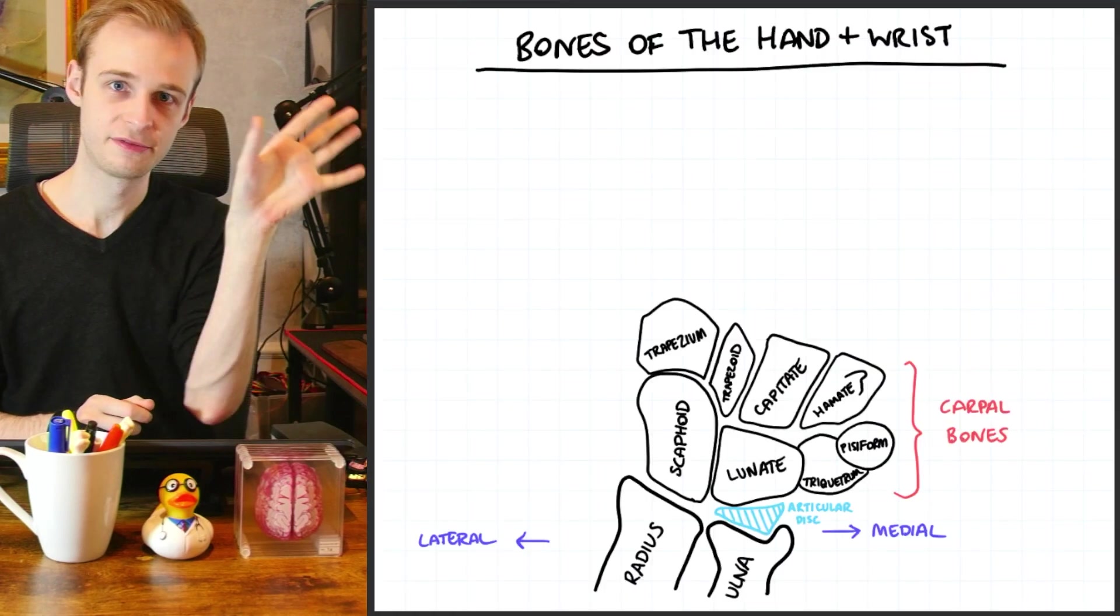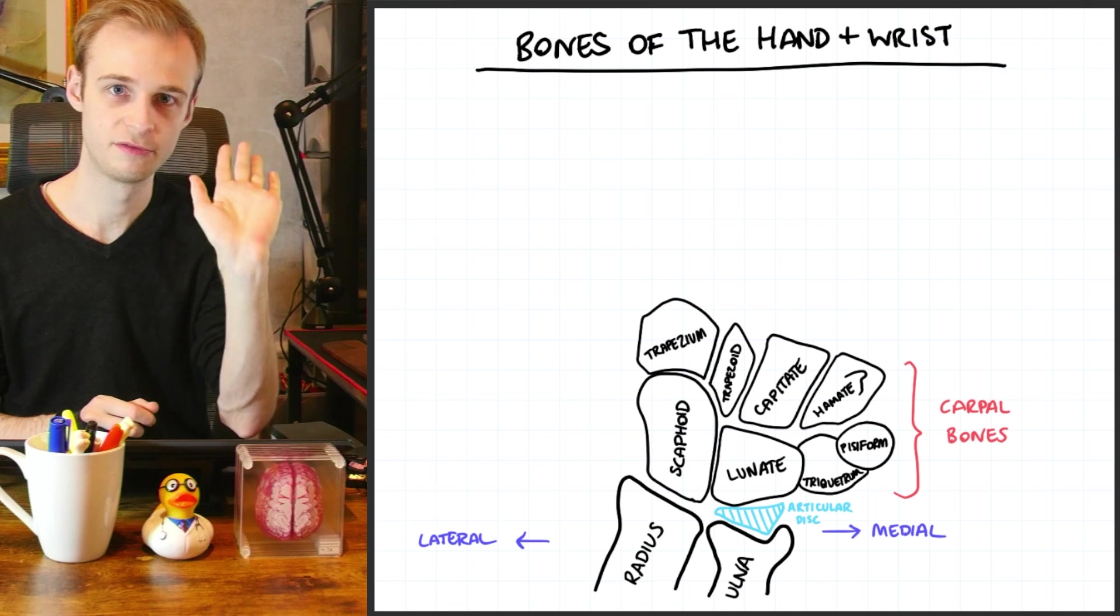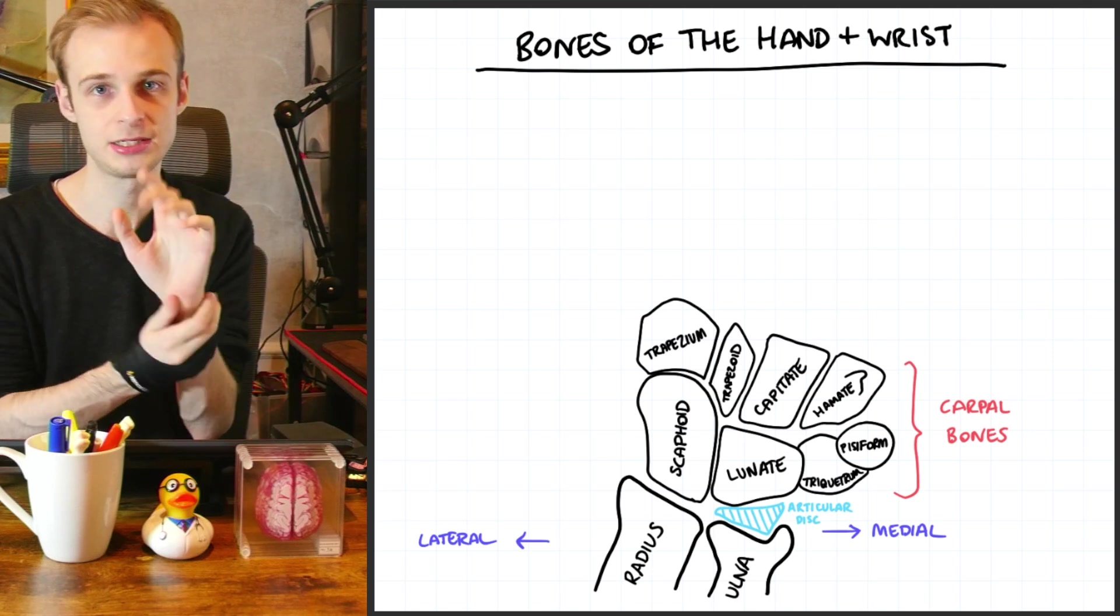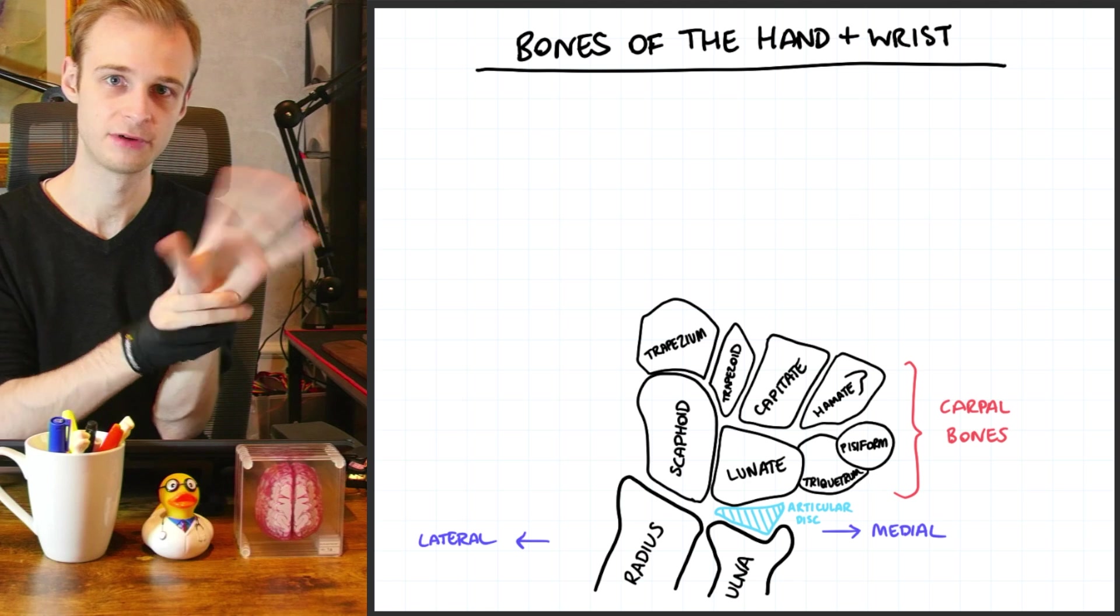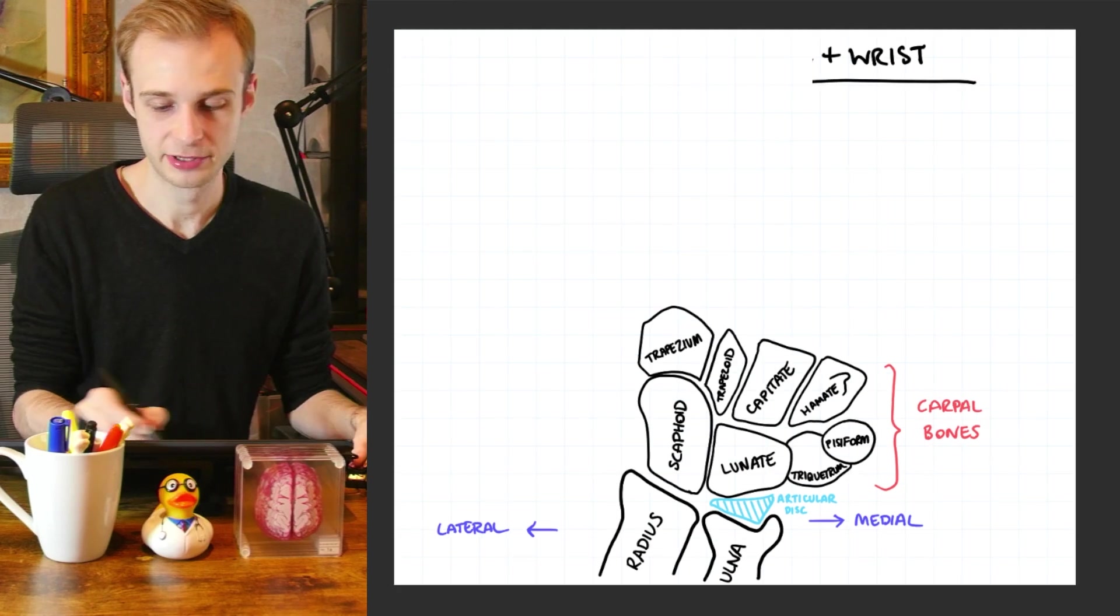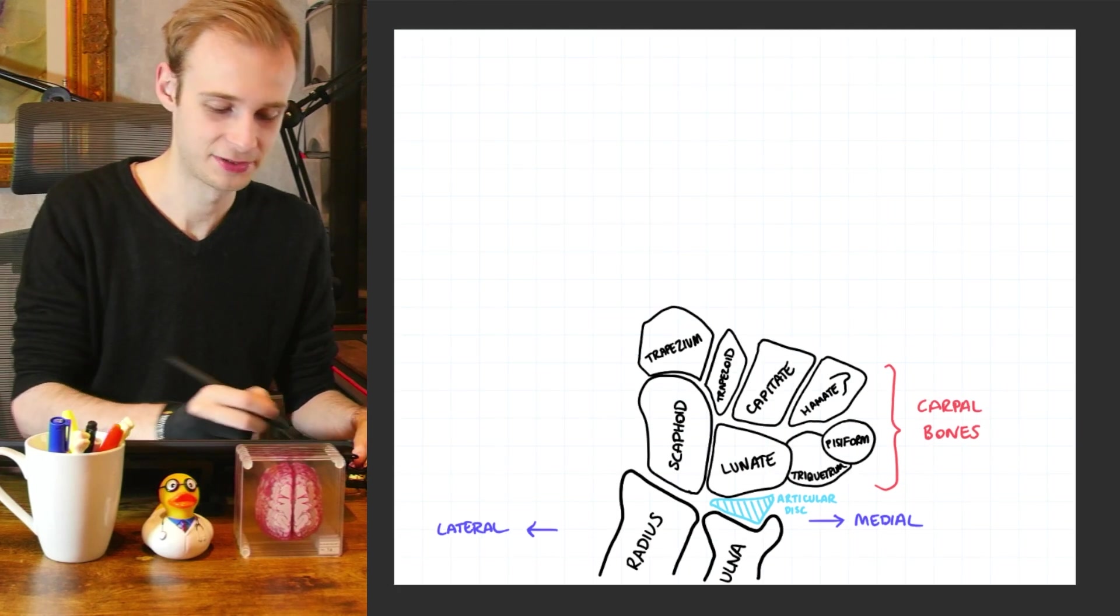which as its name suggests is a disc that allows the ulna to articulate with the carpal bones just as the radius articulates directly with the scaphoid. Because as I'm sure you can imagine we have an incredible degree of movement in our wrist so we need all of these joints to articulate very smoothly. And we're actually going to get rid of our title as well because we're not going to have space for it.